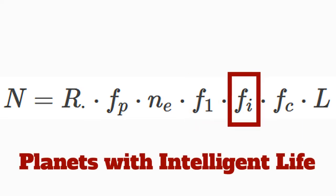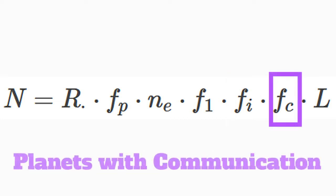F of I is the fraction of these worlds where life becomes intelligent. F of C is the fraction of these worlds where this intelligent life creates technology capable of radio communication and radio astronomy, and this is marked as the beginning of advanced civilization.